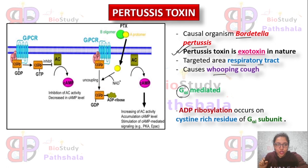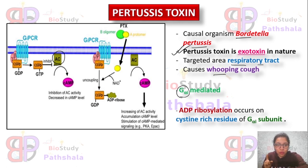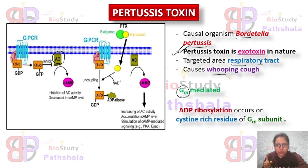This toxin acts through a GPCR-mediated pathway, mainly the Gi alpha subunit-mediated pathway. Gi alpha shows its inhibitory effect on the effector — adenylate cyclase — when in the GTP-bound state, but cannot show any inhibitory effect on AC when in the GDP-bound state. Now we will see how Pertussis toxin shows its effect through the GPCR-mediated pathway.